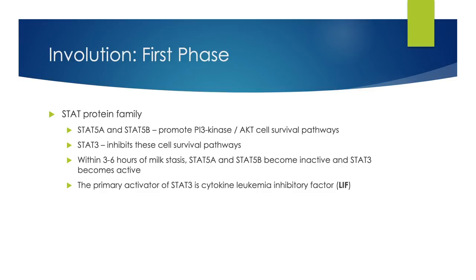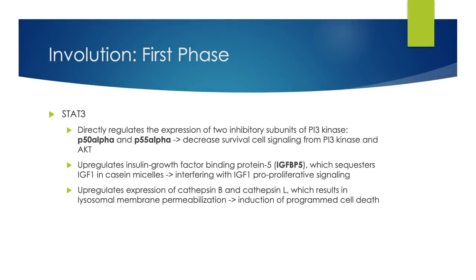Within three to six hours of milk stasis, STAT5a and STAT5b become inactive, and STAT3 becomes active. The primary activator of STAT3 is cytokine leukemia inhibitory factor. STAT3 directly regulates the expression of two inhibitory subunits of PI3-kinase, P50-alpha and P55-alpha, leading to decreased survival signaling from PI3-kinase and AKT. IGF-BP5 sequesters IGF-1 in casein micelles, interfering with IGF-1 pro-proliferating signaling. Finally, STAT3 upregulates expression of cathepsin B and cathepsin L, which results in lysosomal membrane permeabilization and induction of programmed cell death.